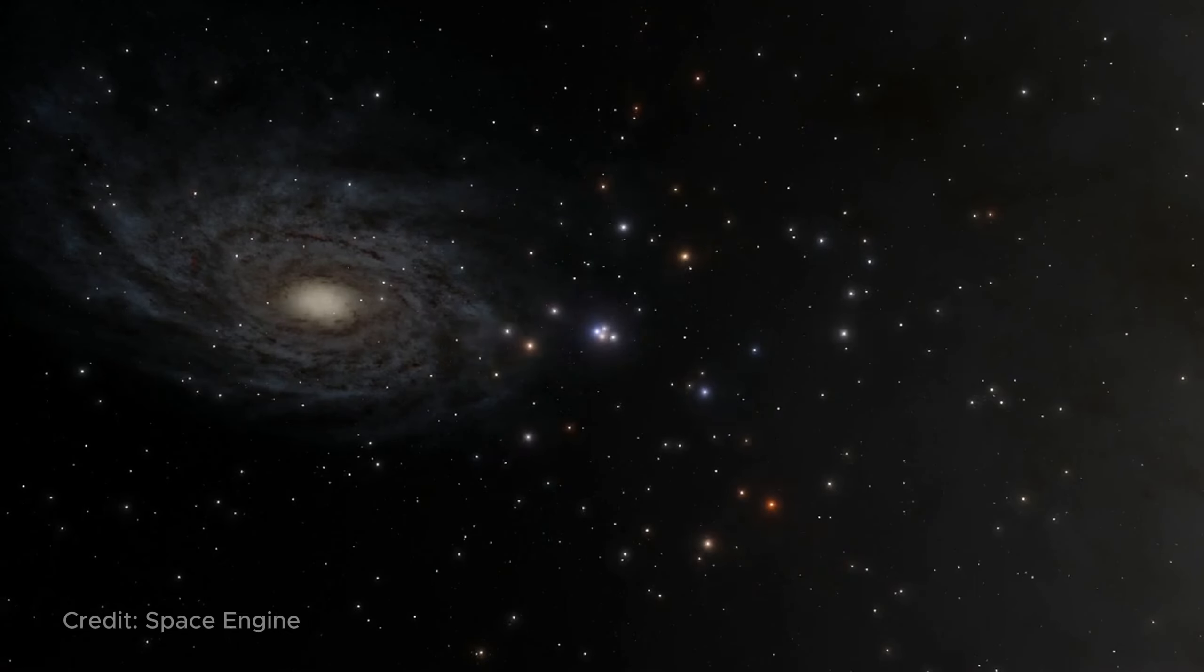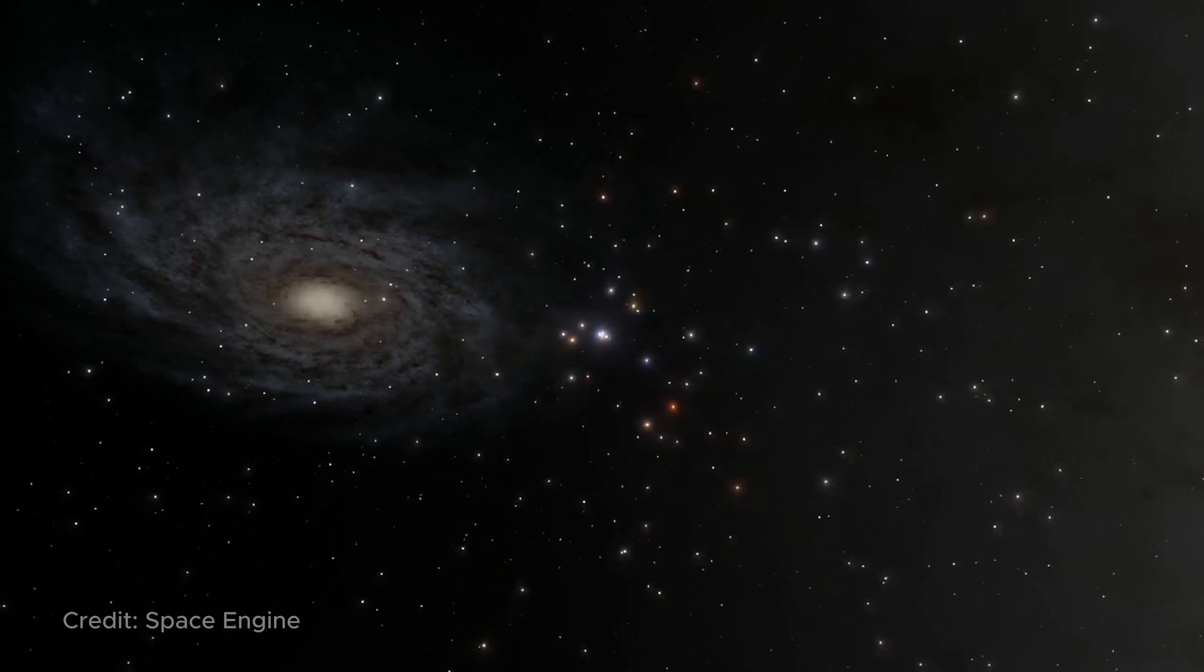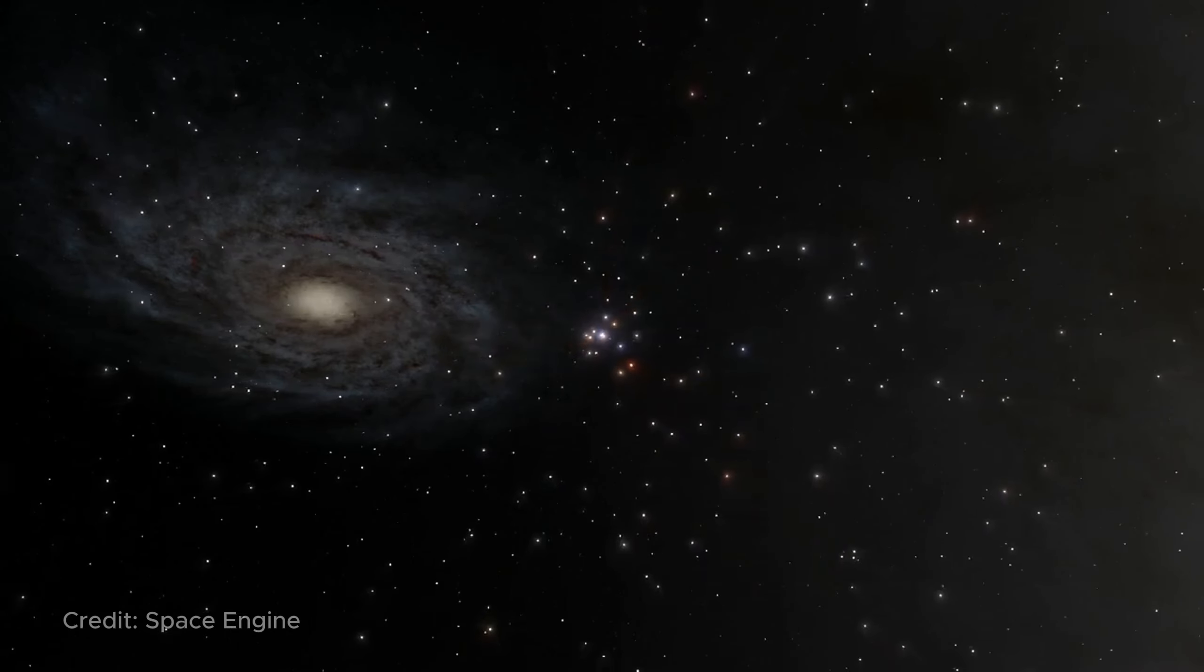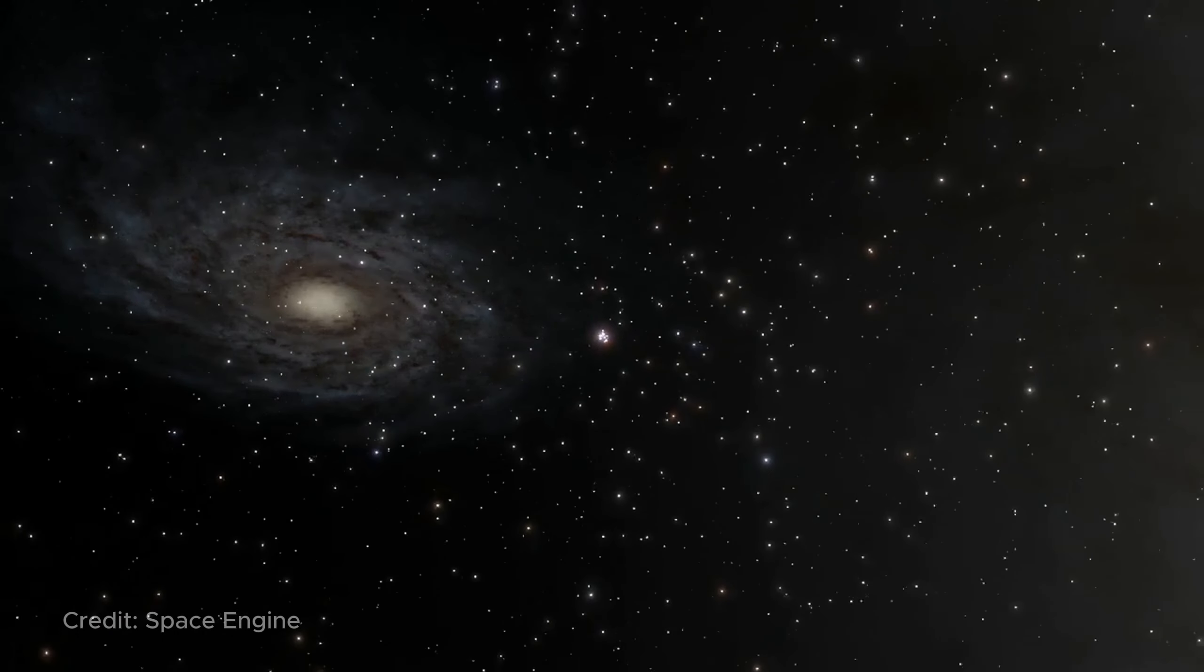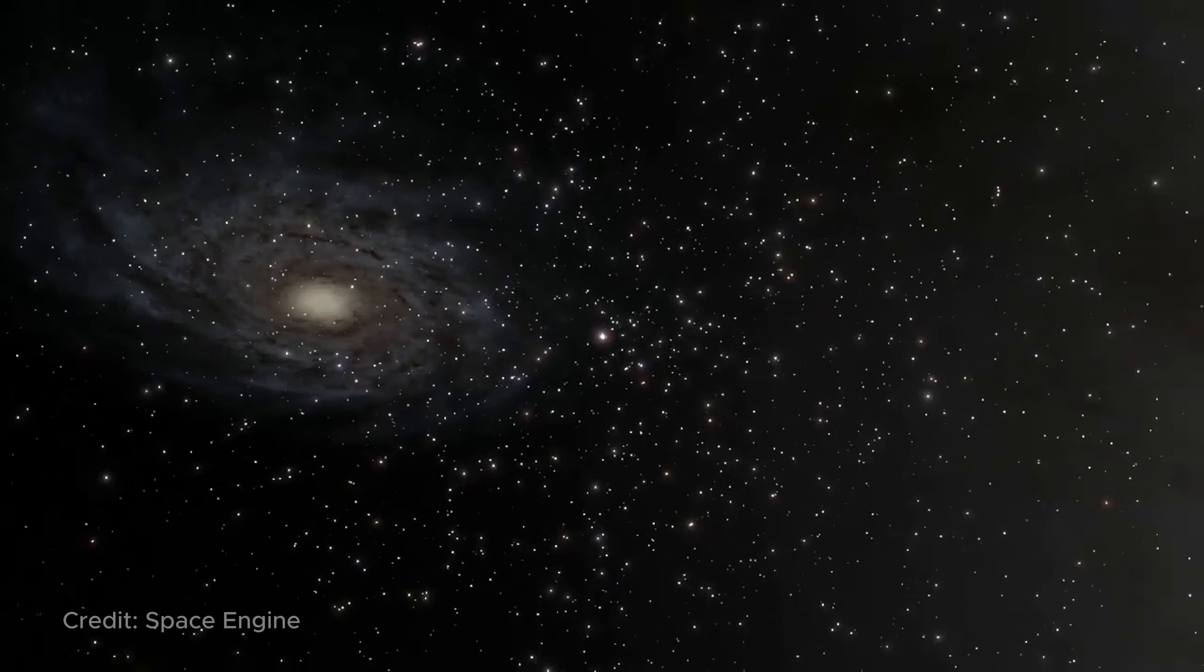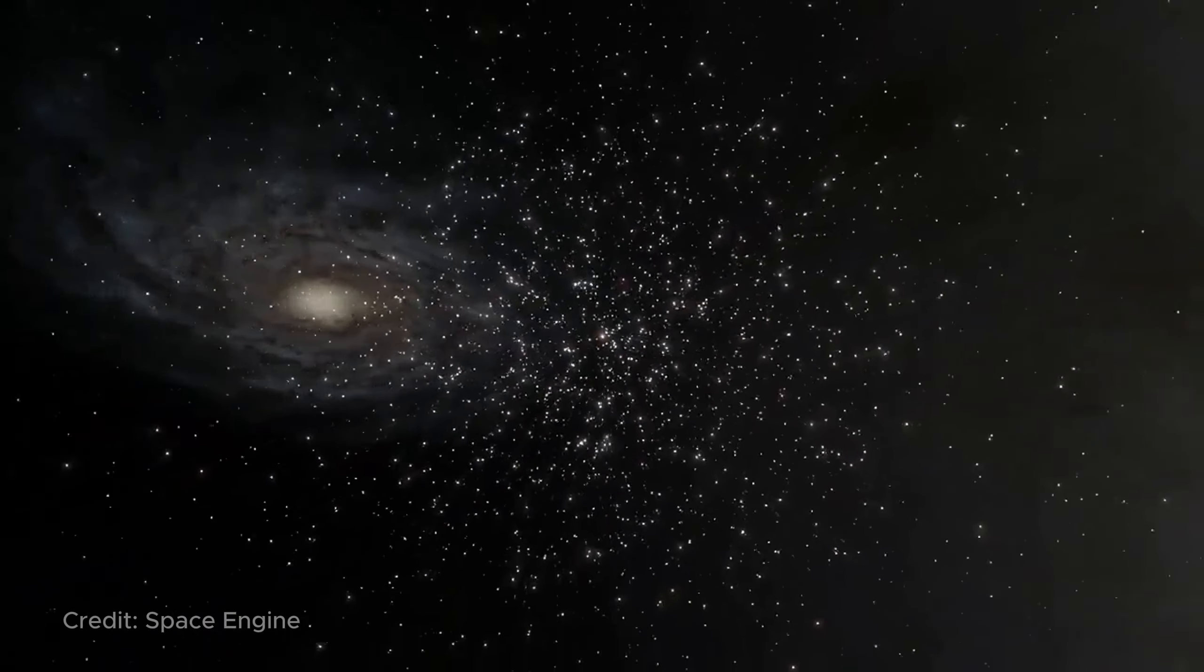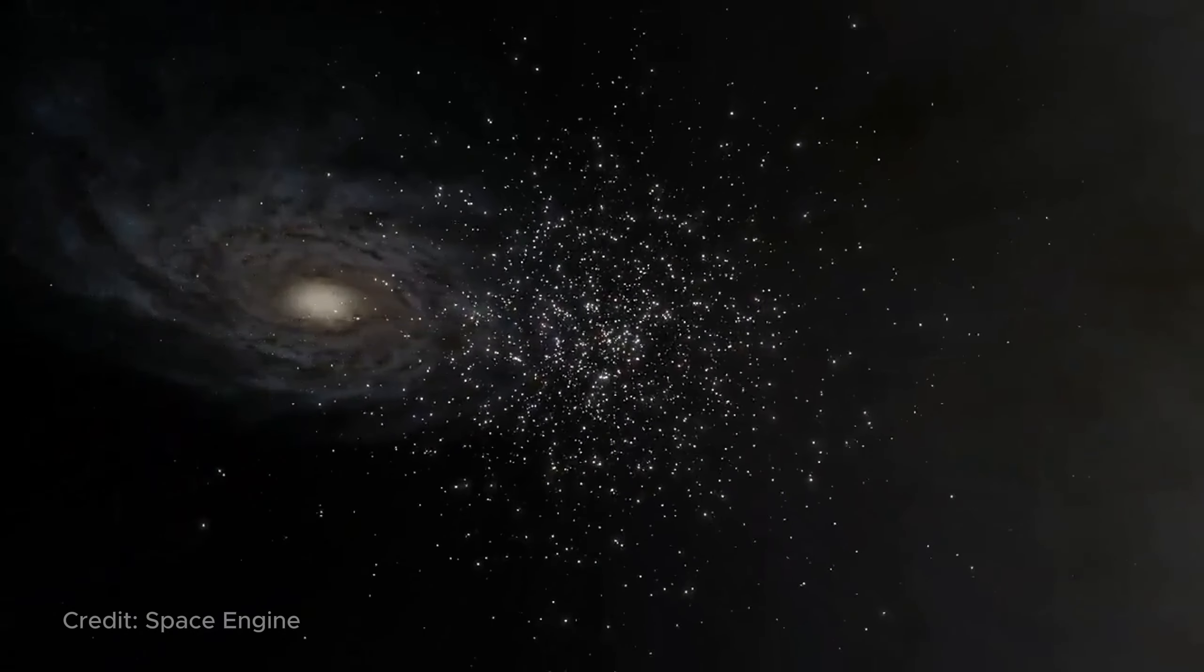In those places where its concentration is higher, ordinary visible matter accumulates, which then forms stars, planets, and ultimately us. Dark matter plays a central role in models of the formation of the large-scale structure of the universe and the evolution of galaxies.